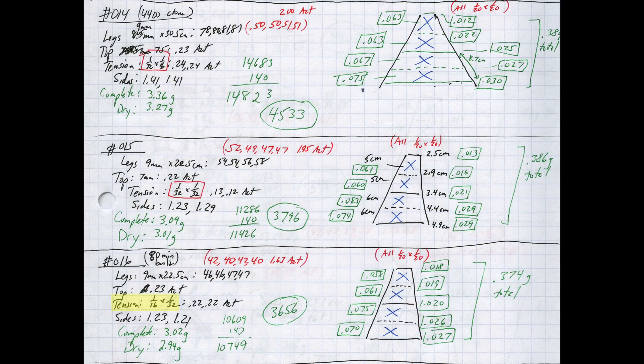For the next build, I went back to 1/16 by 1/32 tension members, but to try and hit the mass target of 3 grams, I reduced the leg mass by about 0.35 grams compared to build number 14. In case you were wondering how long these builds take, I recorded that this build took me 80 minutes, which would have been the time after I made the material selection.